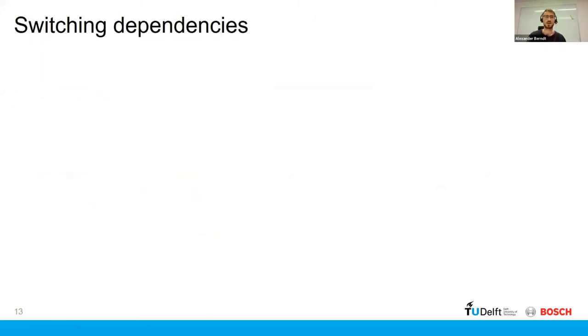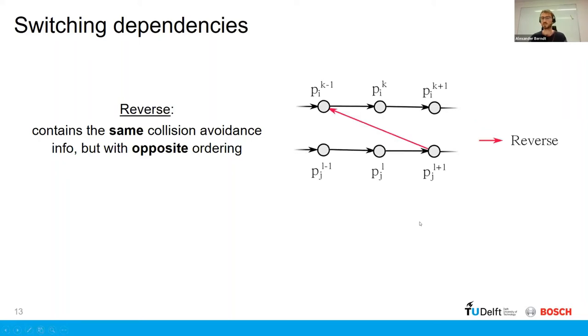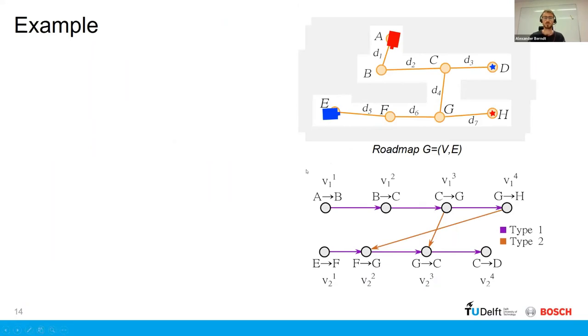So that's all nice and good. Now let's discuss the idea of a switching dependency or a reverse dependency. The idea is that we have the same collision avoidance information of the dependency, but with opposite ordering. So if we have a subgraph of an action dependency graph here, a reverse dependency could look something like that. And the way that we've constructed our action dependency graph is that we have this lemma that we can basically extract a reverse dependency given a forward dependency.